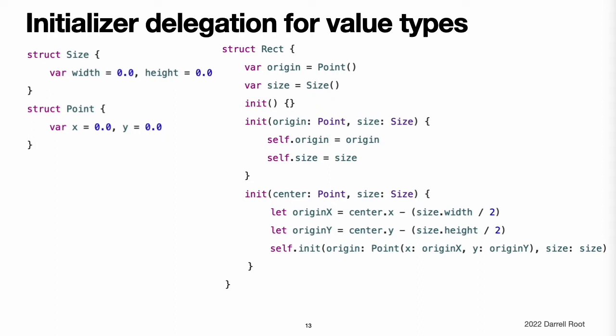For value types, you use self.init to refer to other initializers from the same value type when writing your own custom initializers. You can call self.init only from within an initializer. Note that if you define a custom initializer for a value type, you will no longer have access to the default initializer or the memberwise initializer for that type. This constraint prevents a situation in which additional essential setup provided in a more complex initializer is accidentally circumvented by someone using one of the automatic initializers.